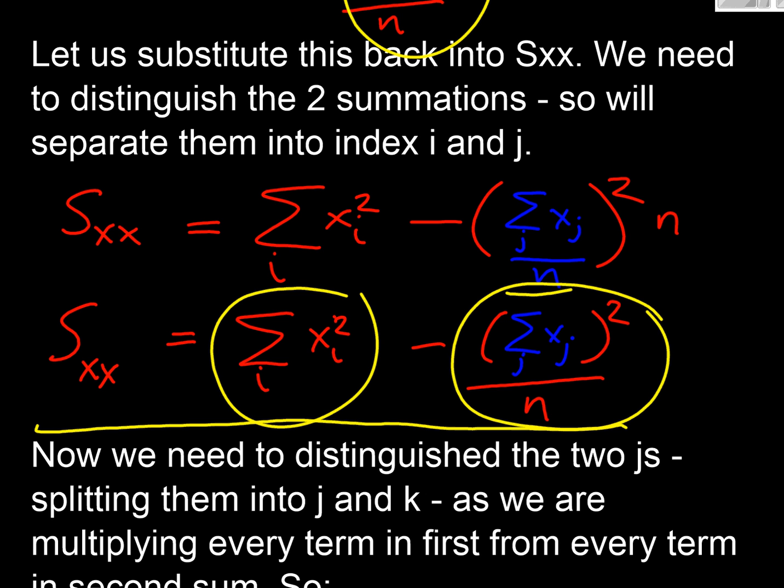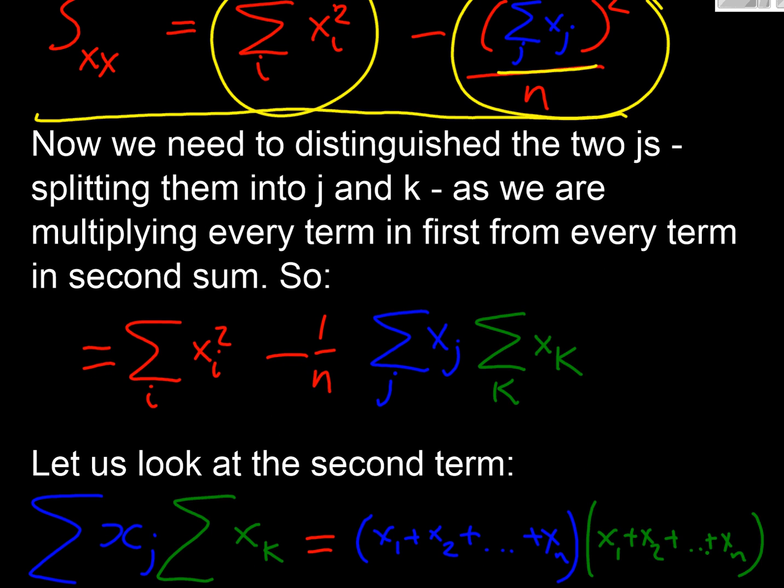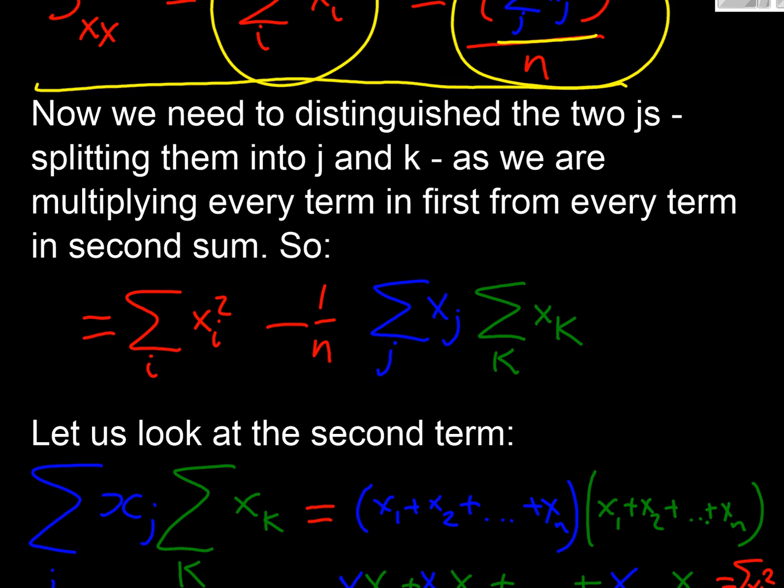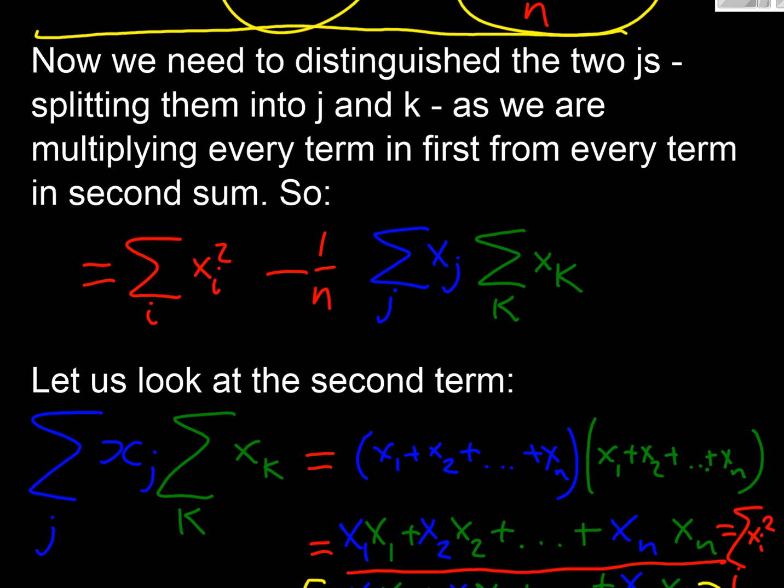Now of course that's the sum multiplied by the sum again, and I want to distinguish here that we've got x1 plus x2 plus x3, that's our first version of the sum in blue, and then in the green here we've got the same x1 x2 x3 all summed up, and that's the second sum.